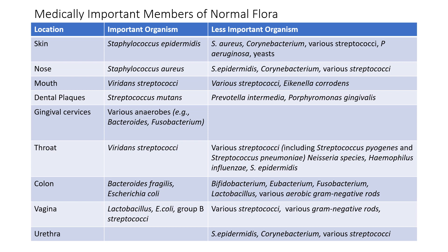The mouth harbors viridans streptococci as the most important normal flora on dental plaques. Streptococcus mutans is found on gingival surfaces. Various anaerobes, for example Bacteroides and Fusobacterium, may also be present. The throat's most important normal flora is viridans streptococci.